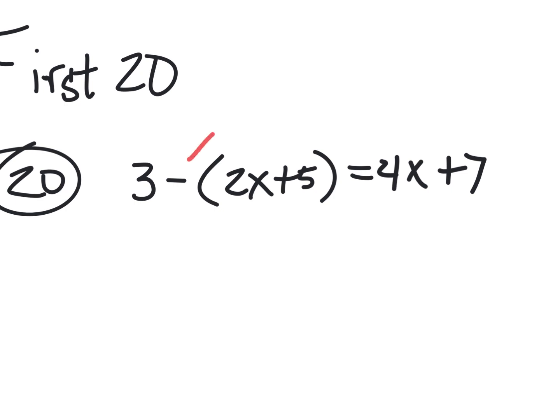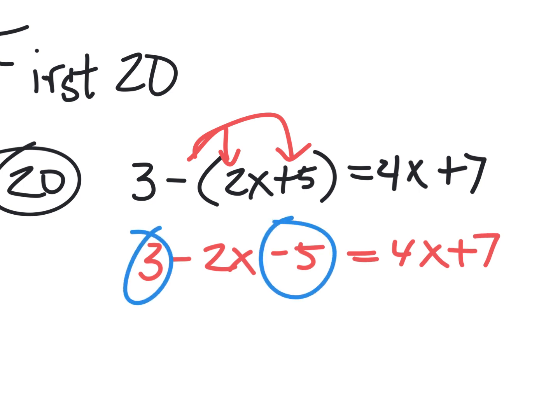Distribute. Good. That negative has to get distributed to both parts, here and there. So I'm going to do that. 3 minus 2x minus 5 equals 4x plus 7. There is a right thing to do next. What's the next thing? 3 goes to negative 5. These go together, and what do you get when you put them together? Negative 2. And then I still have minus 2x.